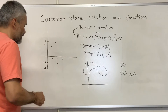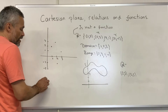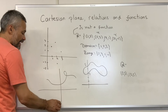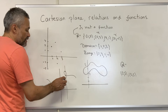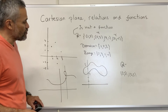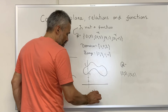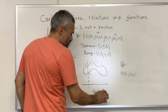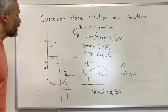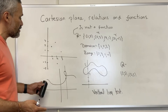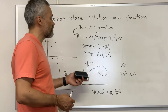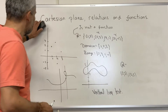In general, when we have a relation, if we can find a vertical line that crosses the collection of points in more than one point, then that relation is not a function. This is called the vertical line test. When we have a relation that is a function — that means it passes the vertical line test — we have a function, and with that function we can find the values of that function. Let's do an example.